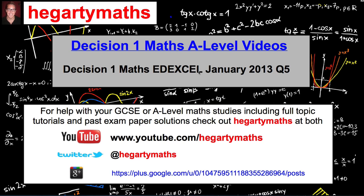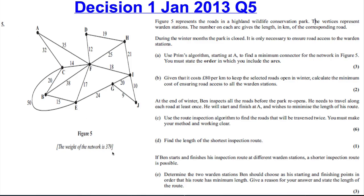Okay, we're doing Decision 1, question 5 of the January 2013 paper. Let's take a look. So we've got a network that is 379 long, and it tells us that the figure represents the roads in a highland wildlife conservation park, and the vertices are the warden stations, and the numbers are the length in kilometers of each road. So during the winter months, the park is closed. It's only necessary to access the warden station. Use Prim's algorithm starting at A to find the minimum connector for the network. You must state the order in which you include the arcs. And then part B, given it costs £80 per kilometer to keep each selected road open, calculate the minimum cost of ensuring the road access to the warden stations.